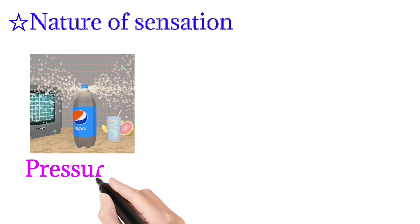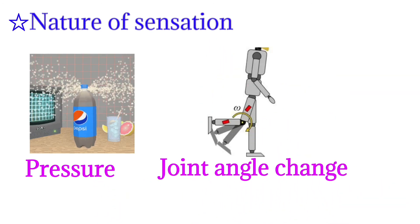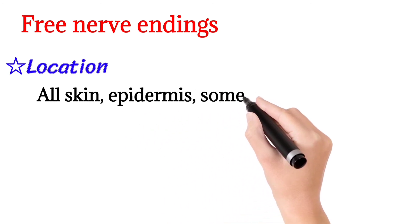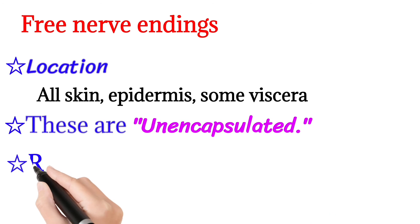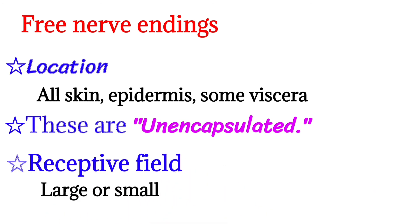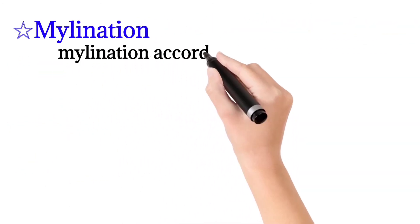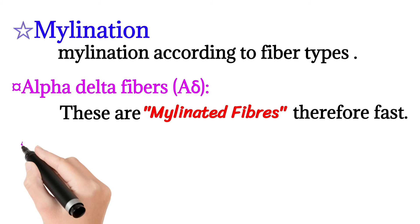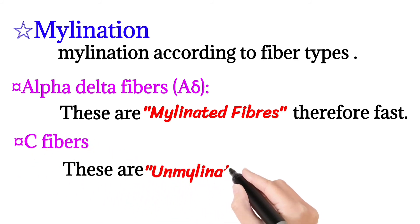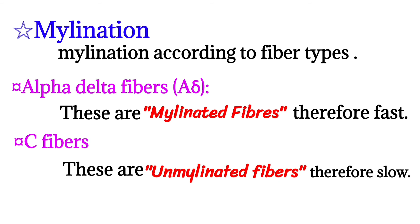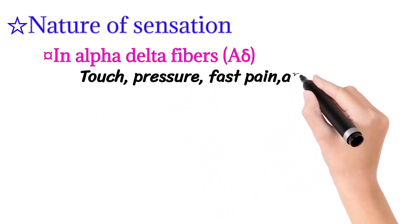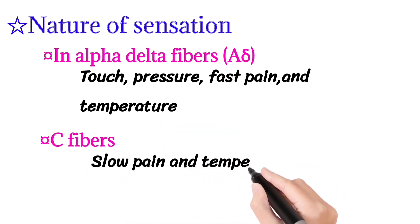Then we will talk about free nerve endings. Their location is all skin, epidermis, and some viscera, and these are non-encapsulated. The receptive field may be small or large. Regarding myelination, according to fiber types: A-delta fibers are myelinated fibers, therefore fast; C fibers are unmyelinated fibers, therefore slow. The nature of sensation for A-delta fibers is touch, pressure, fast pain, and temperature. For C fibers, it is slow pain and temperature.